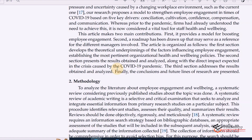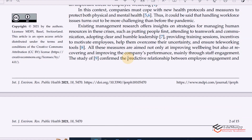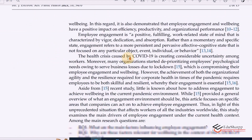In the end, you will see that they have presented the structure of the paper: 'The article is organized as follows. The first section develops the theoretical underpinnings of the factors influencing employee engagement. The second section presents the results obtained and analyzed. The third section addresses the results obtained and analyzed.' So basically they have presented the paper structure as well. You can now see that they have answered why, they have answered how, they have presented the research questions, the hook statement, the background information, and the paper structure. This is how a good introduction is written.